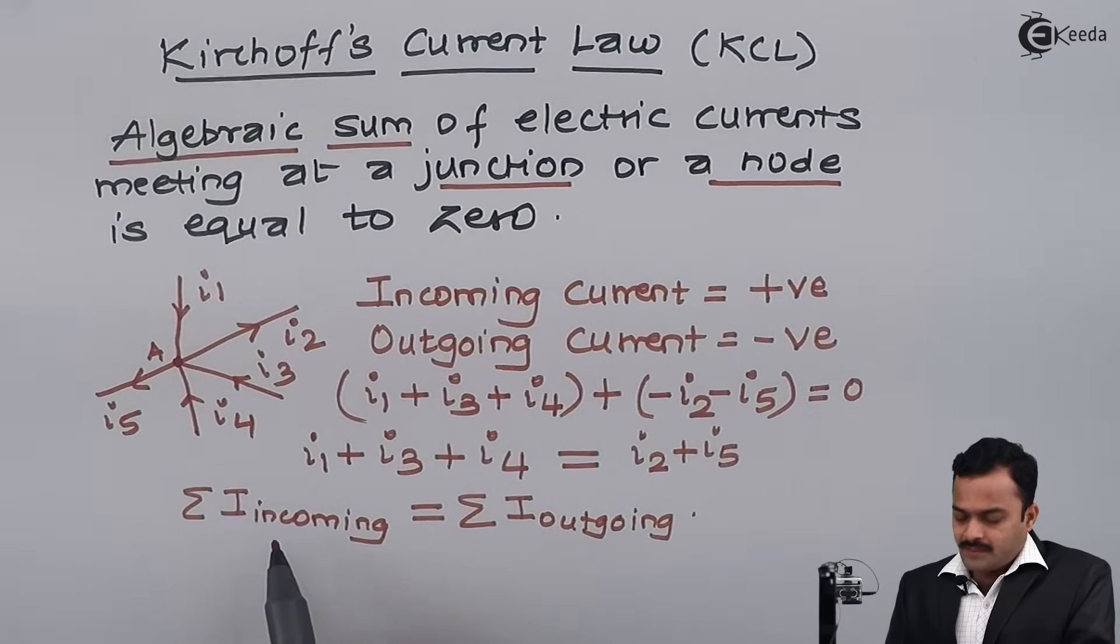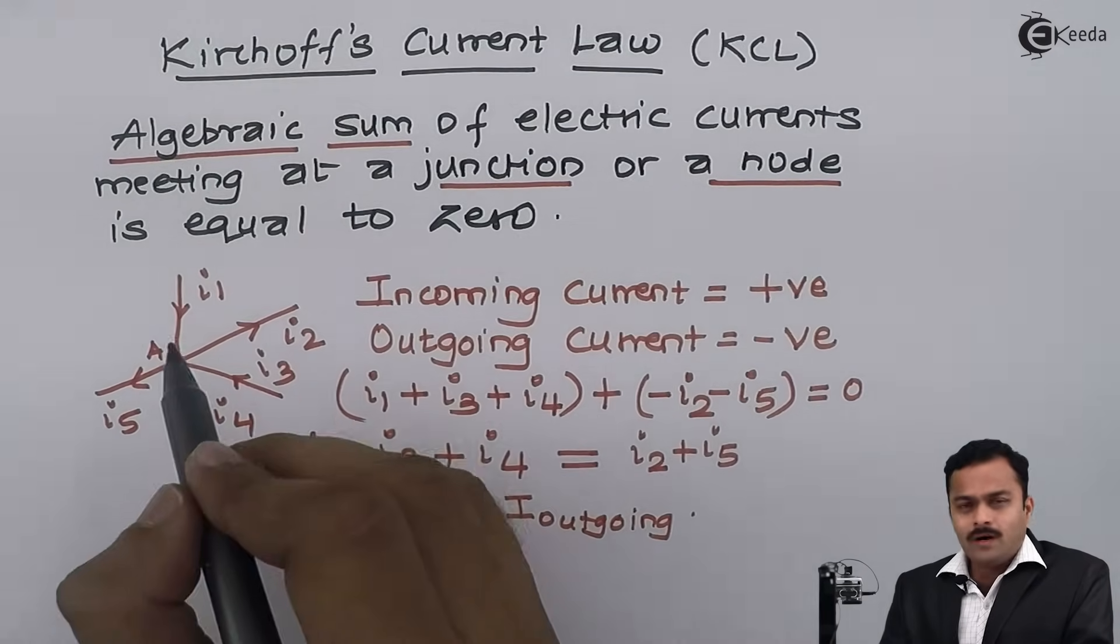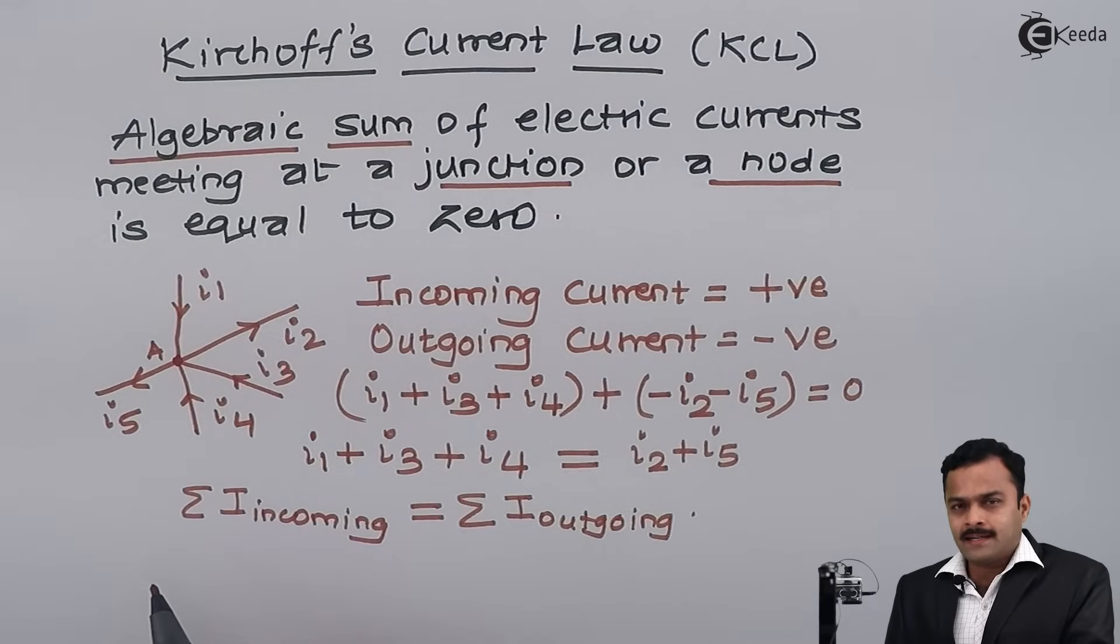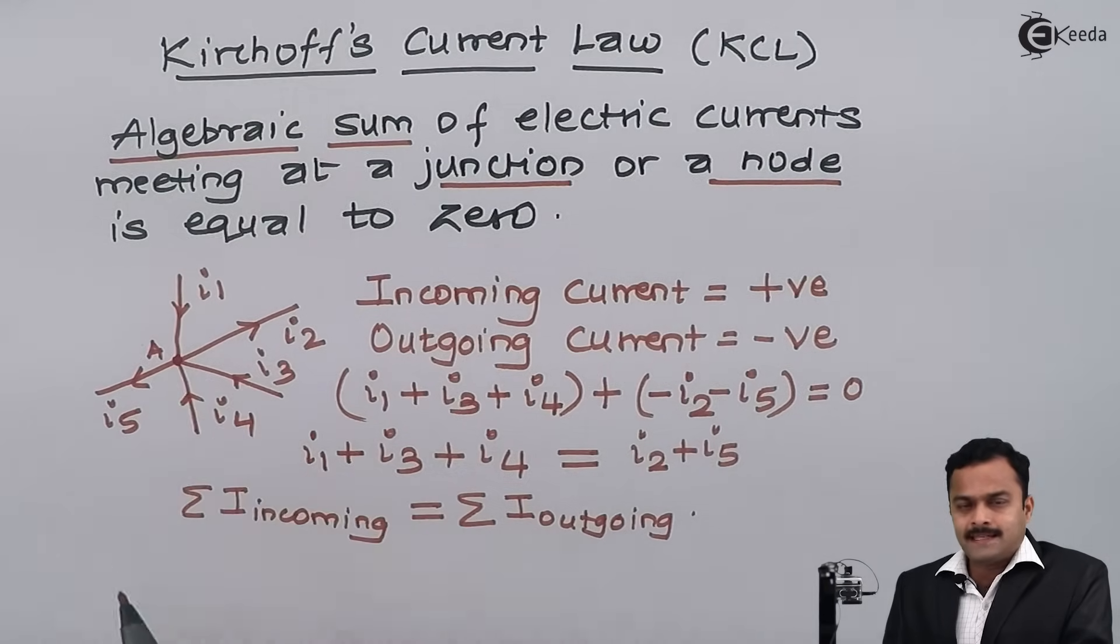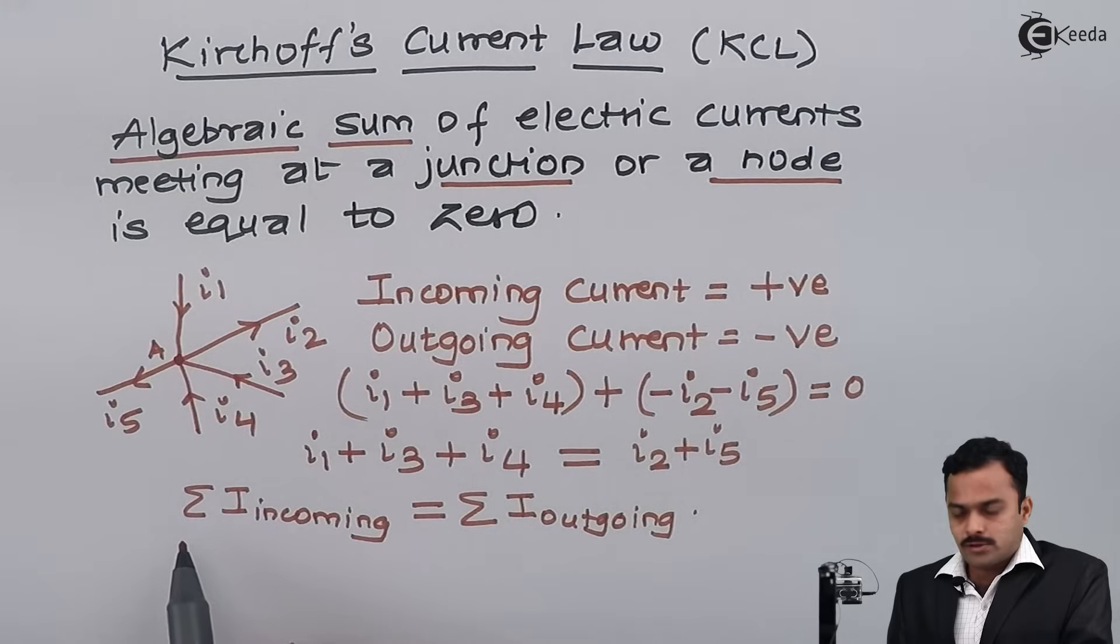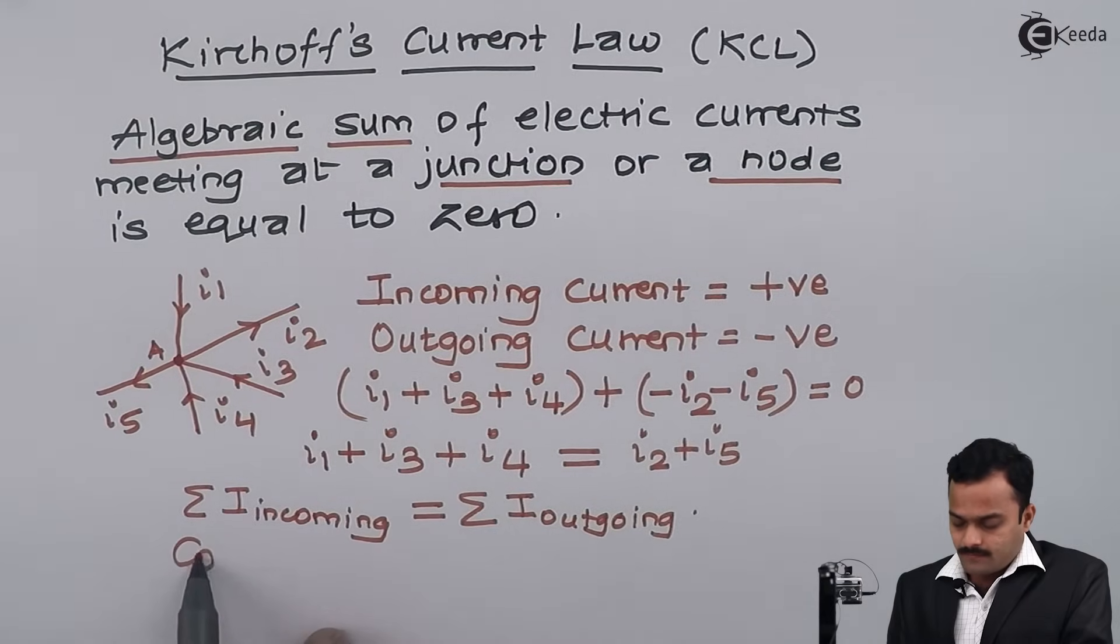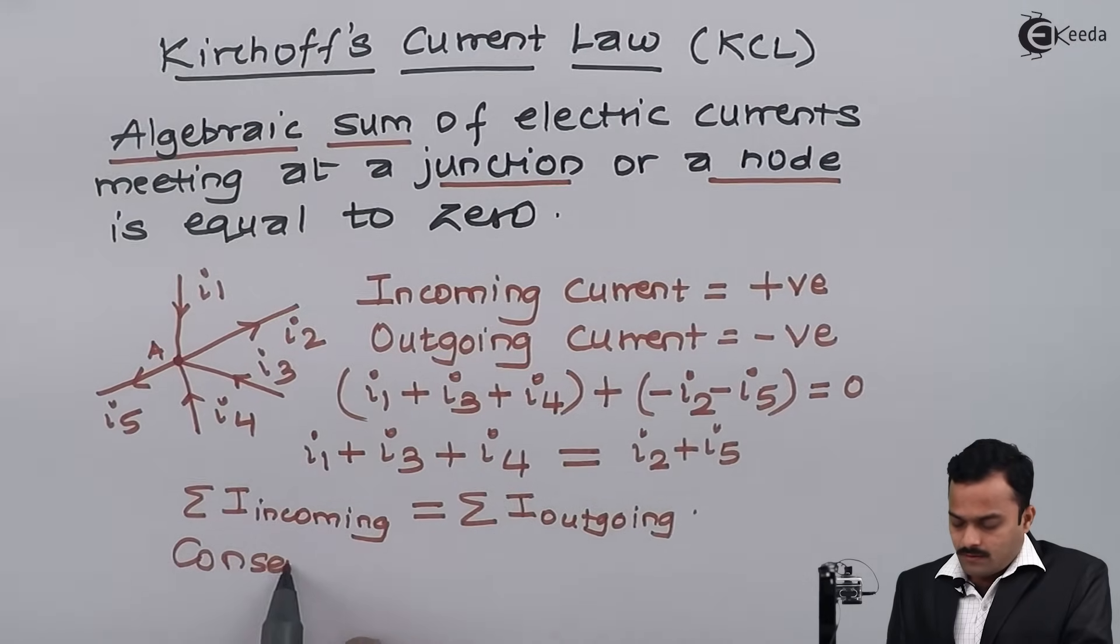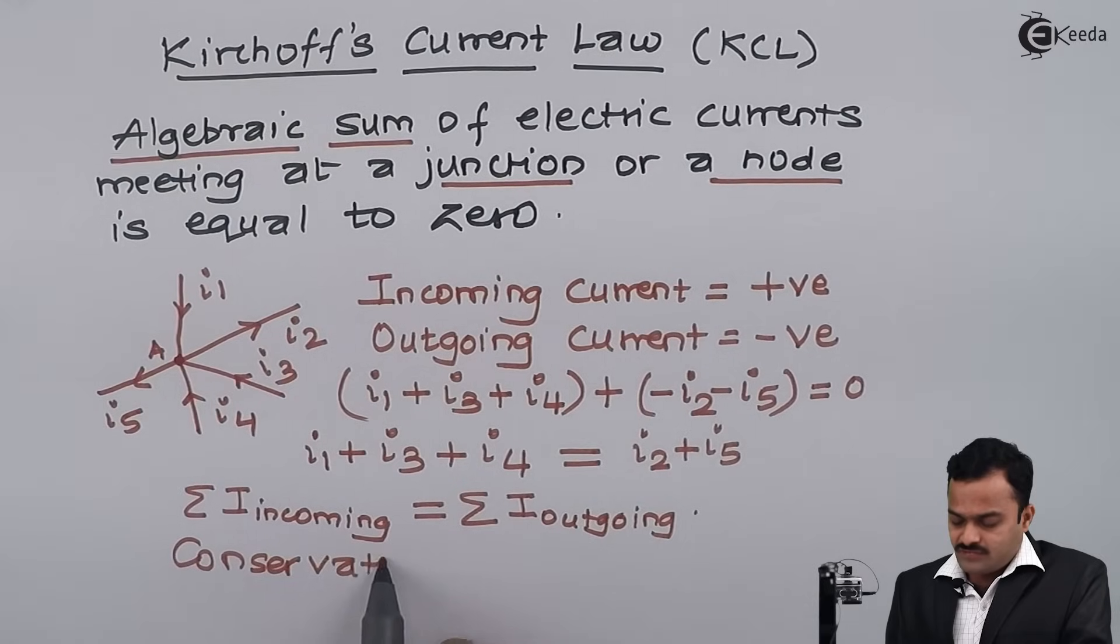I am considering that whatever charges are incoming to this node, the same charges are outgoing. So ultimately, KCL can also be understood as conservation of charge.